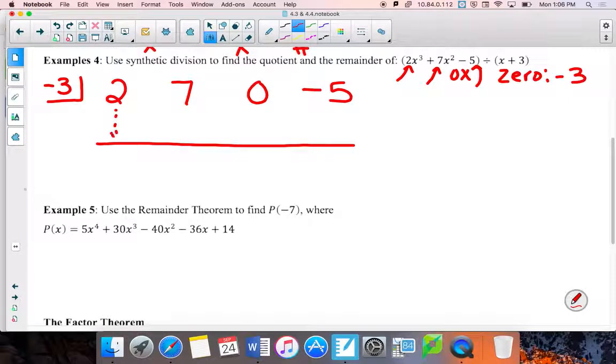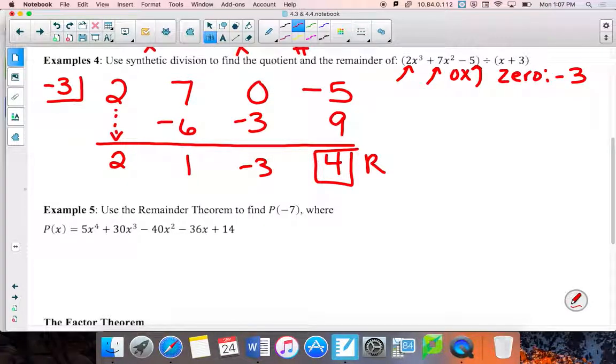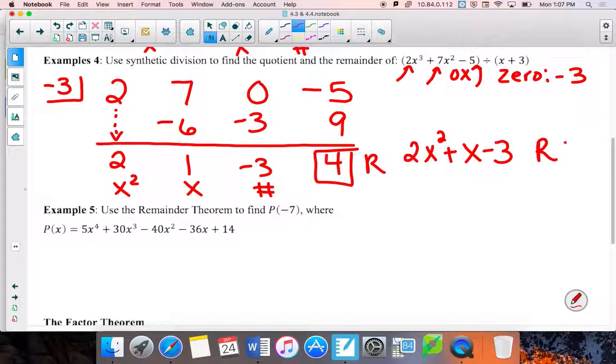Bring down your first number. Multiply negative 3 times 2 for a negative 6. Add those together. Positive 1. Time to multiply. Negative 3 times 1, negative 3. Add those together. Negative 3. Multiply. Negative 3 times negative 3. Positive 9. Add 4. Last number is your remainder. Constant. X. X squared. Et cetera. And if there were more, we would just continue to write more. So this answer is going to be a 2x squared plus 1x minus 3 with a remainder of 4.